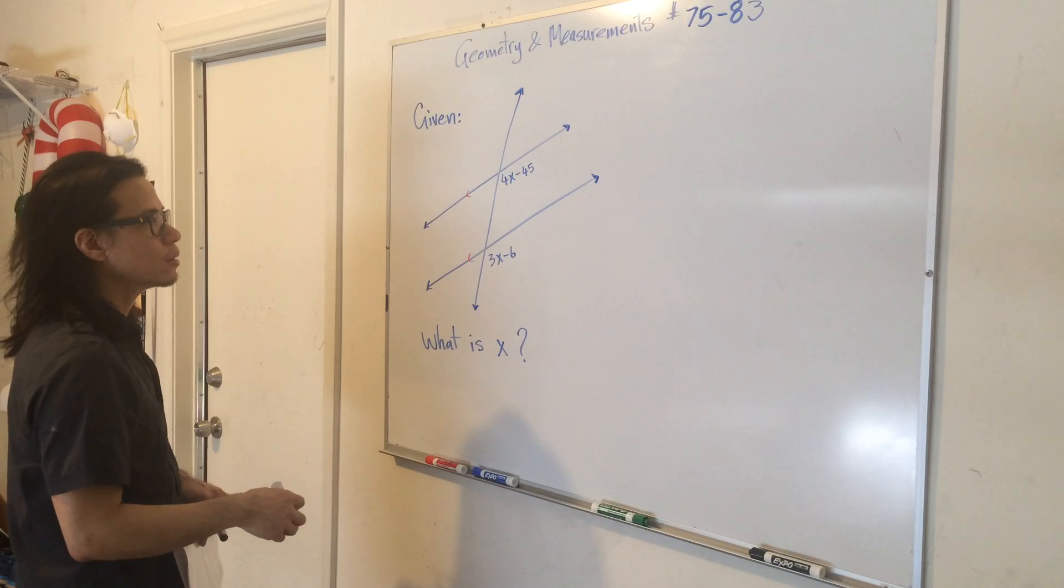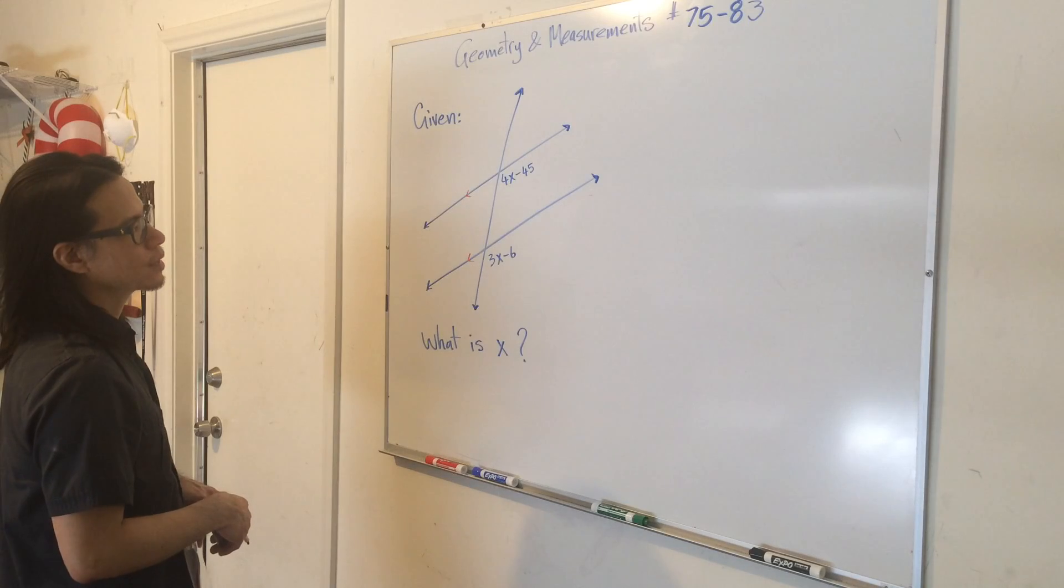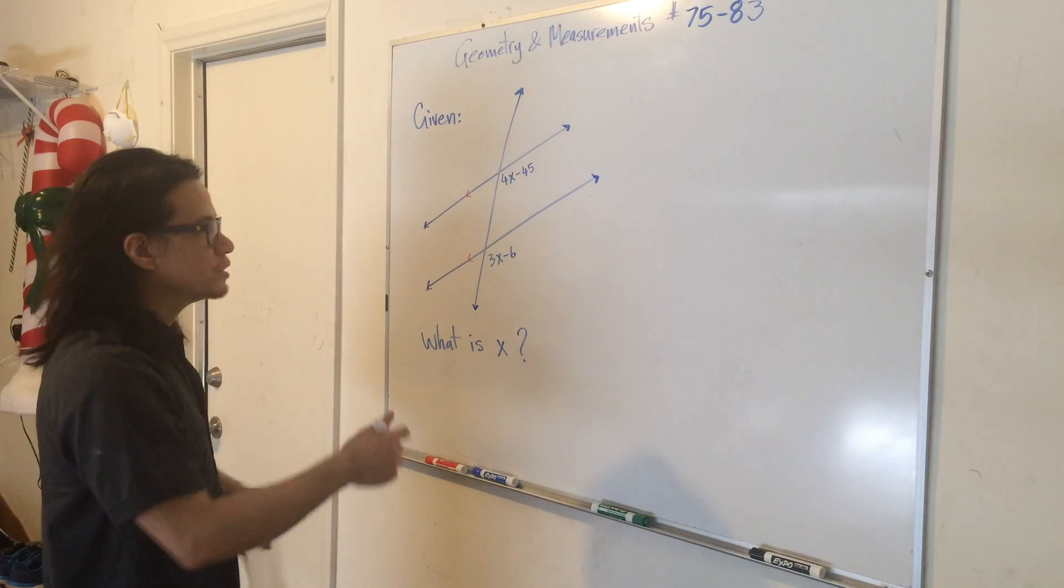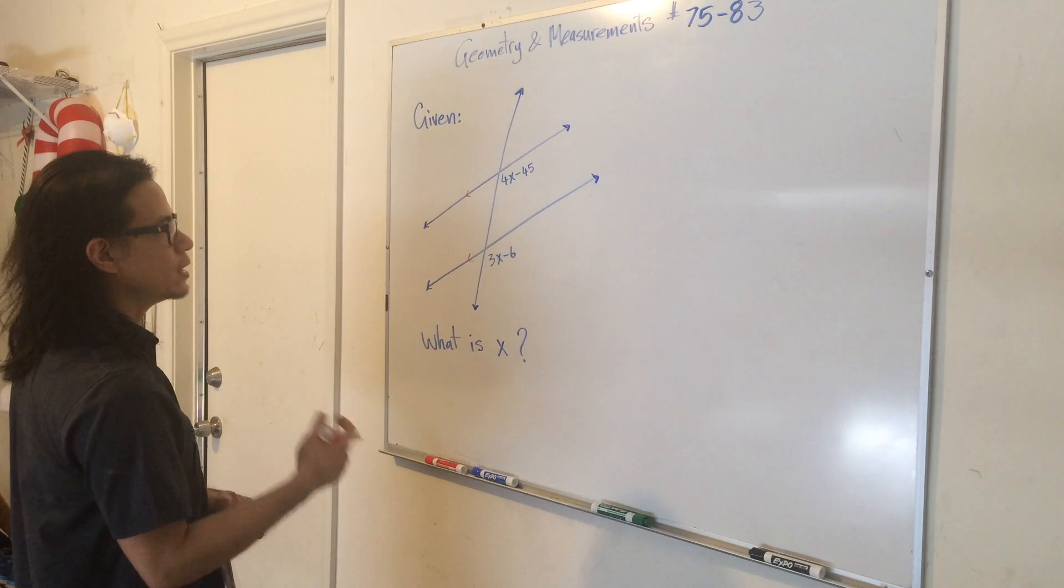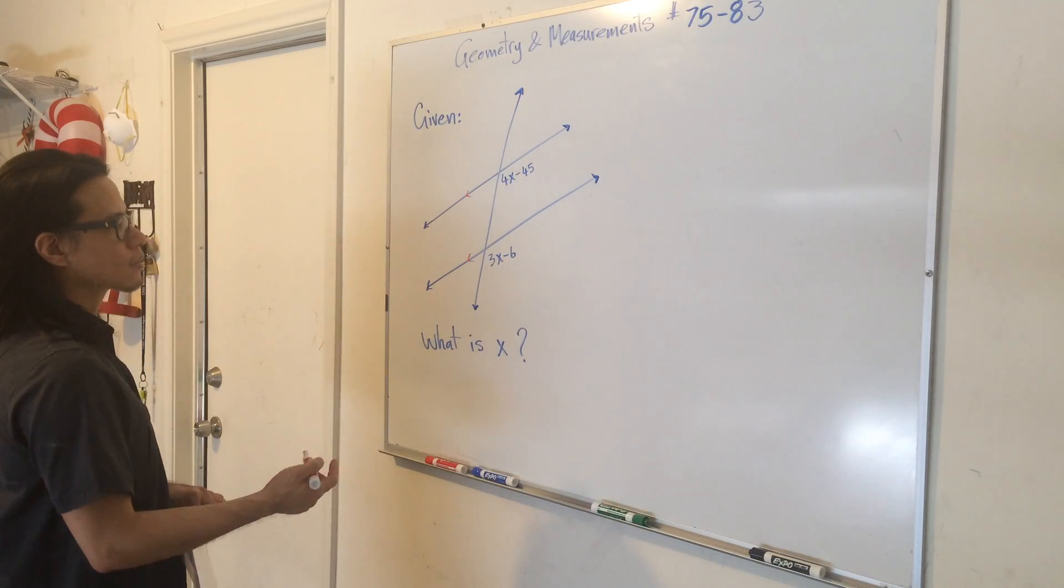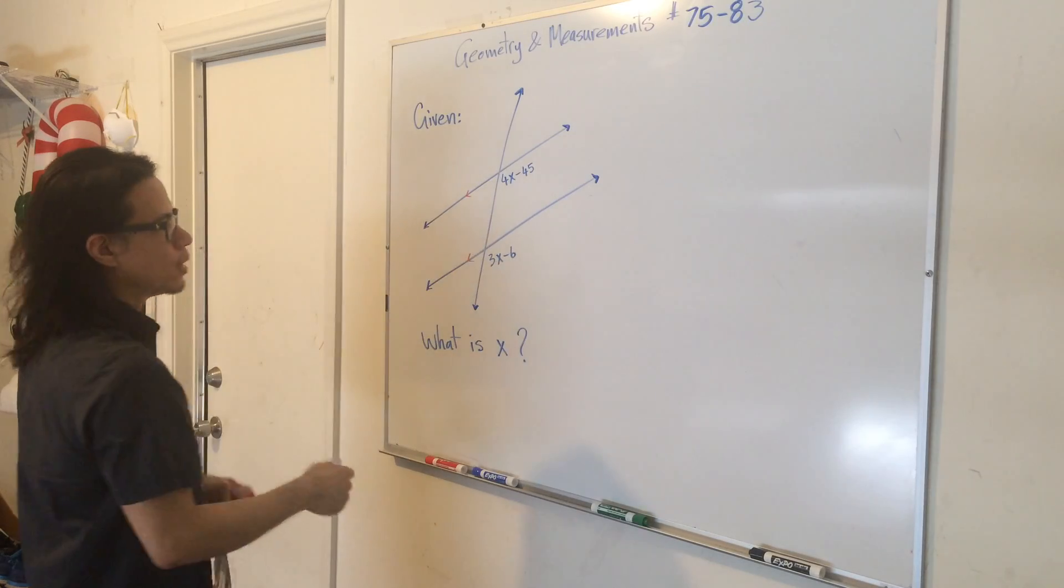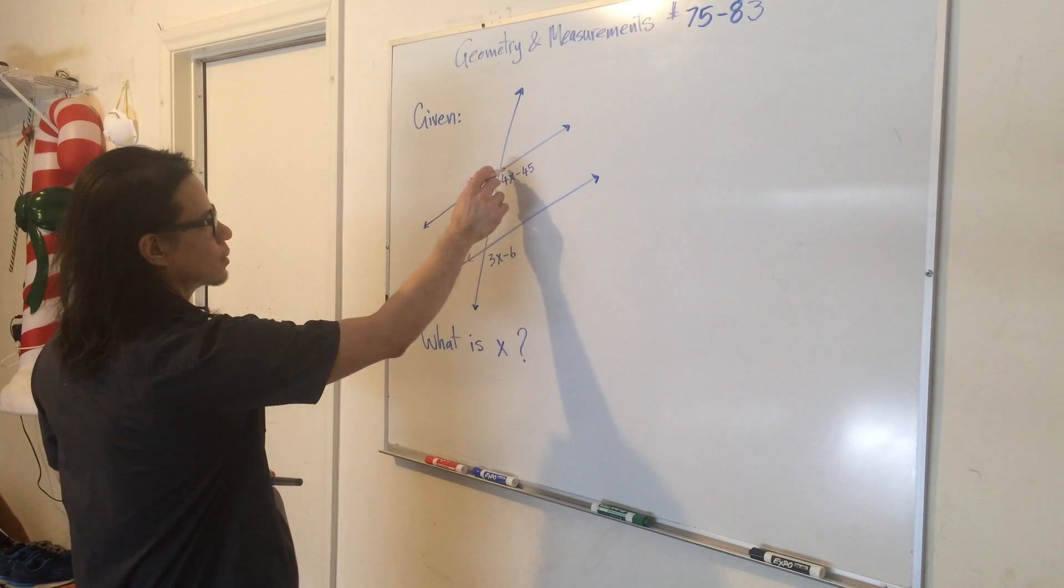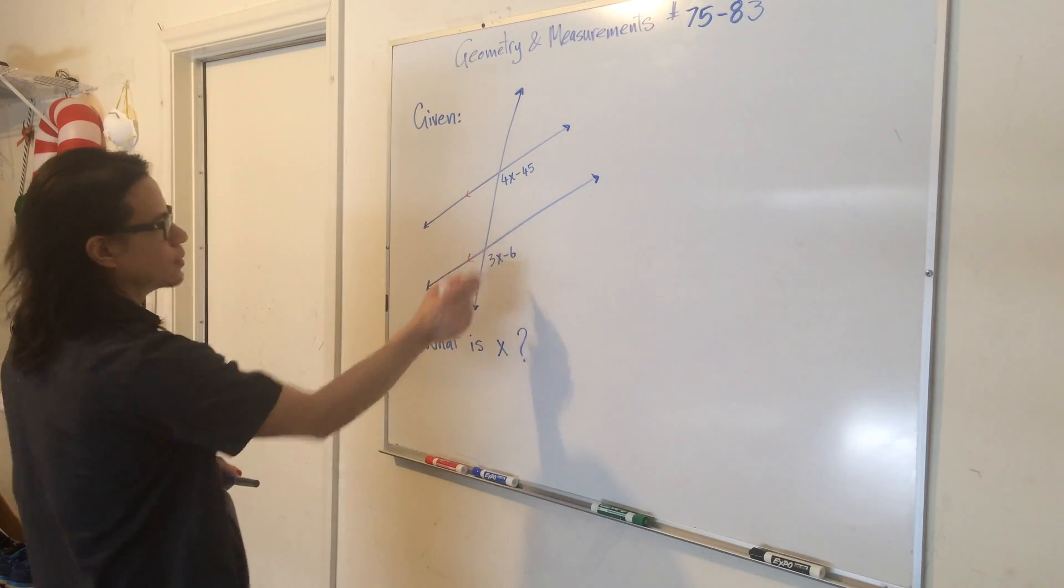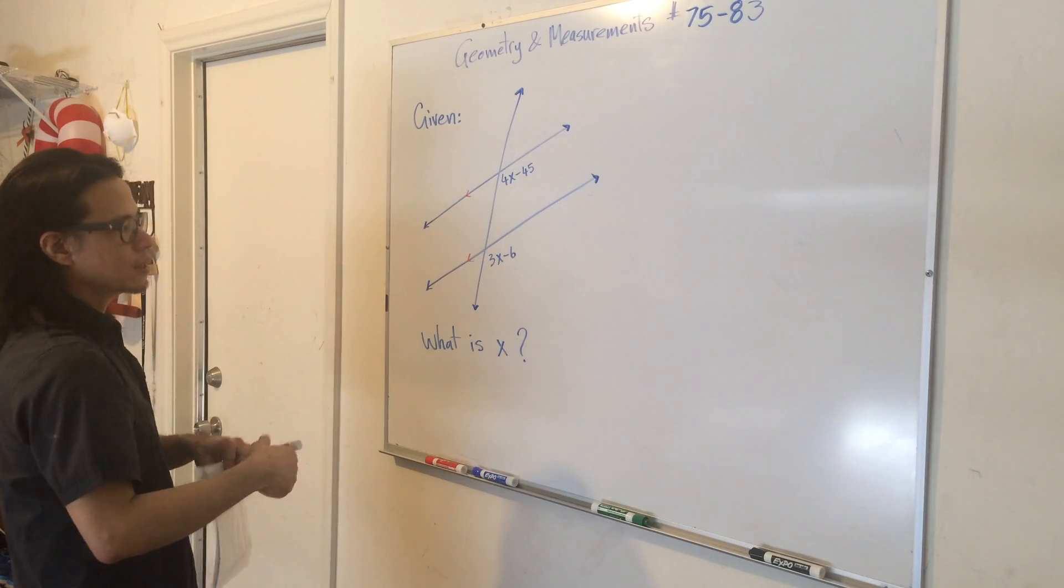You've been taking notes on corresponding angles, alternate exterior angles, alternate interior angles. So which category would these two angles fall into? Here's an angle, this angle. If you say that these two are corresponding angles, you are correct.